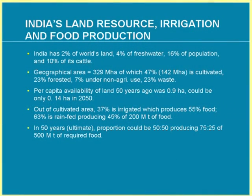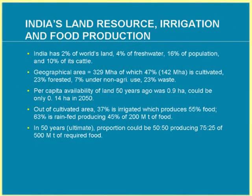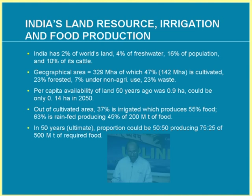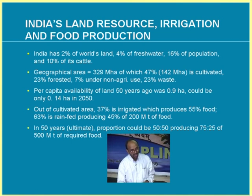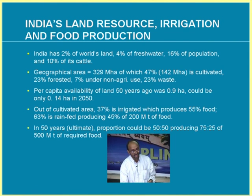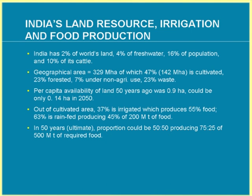Currently, only 37% of cultivated area in India is irrigated, producing 55% of food requirements — about 200 metric tons. The remaining 63% is rainfed land, producing only 45% of food requirements. The Government of India aims to increase irrigated area from 37% to at least 50%, so that irrigated land produces about 75% of food through various practices, and the remaining 25% comes from non-irrigated land — this is needed as food requirements by 2050 may exceed 500 metric tons.